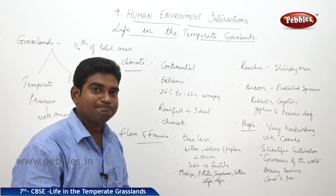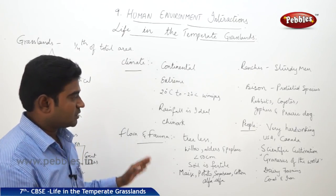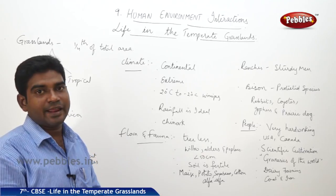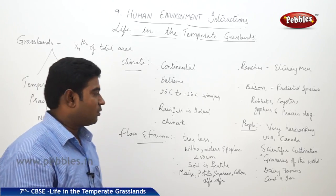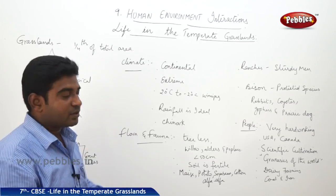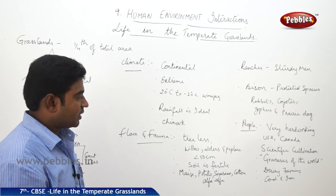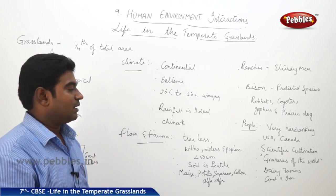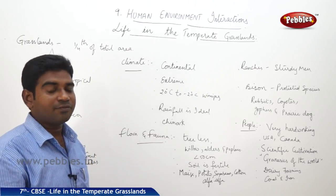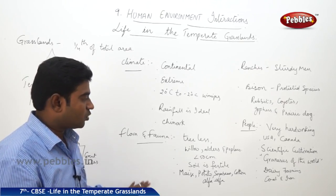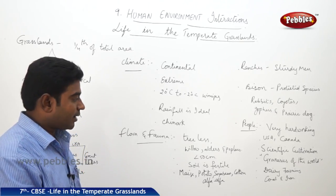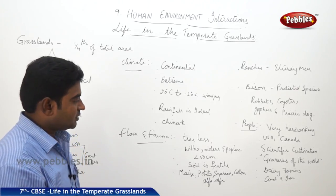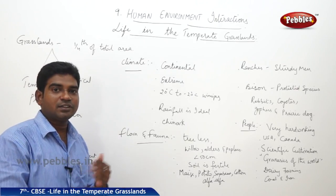Coming to the flora first — as mentioned earlier, the grasslands are essentially treeless lands, so very few trees are grown here. These include the willow tree, alder tree, and poplar tree. They require rainfall of 50 centimeters or less, which is ideal for them. The soil is really very fertile. The crops which are grown here are maize, potato, soya bean, cotton, and alfalfa.